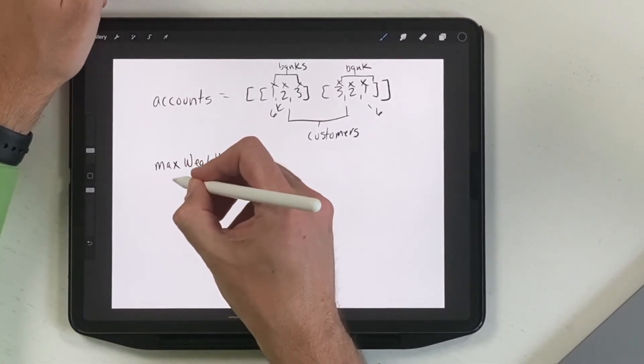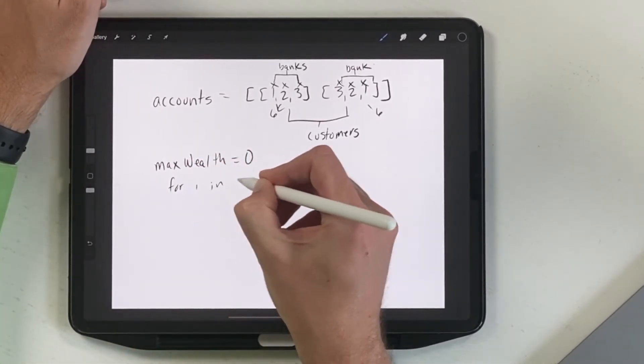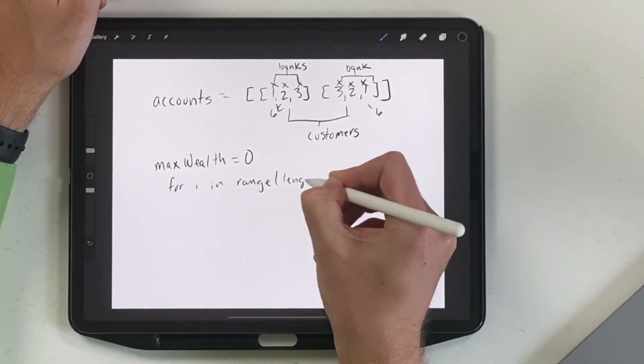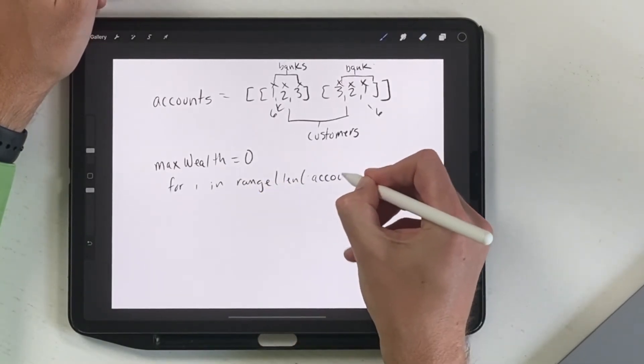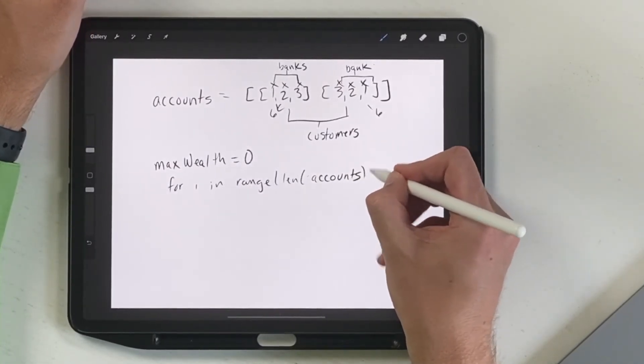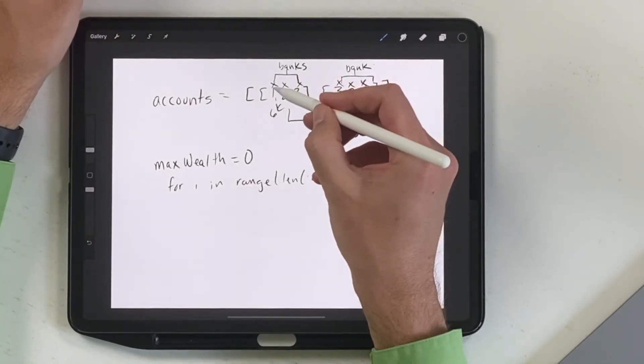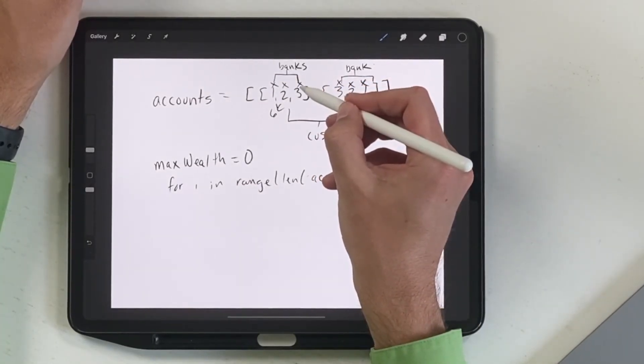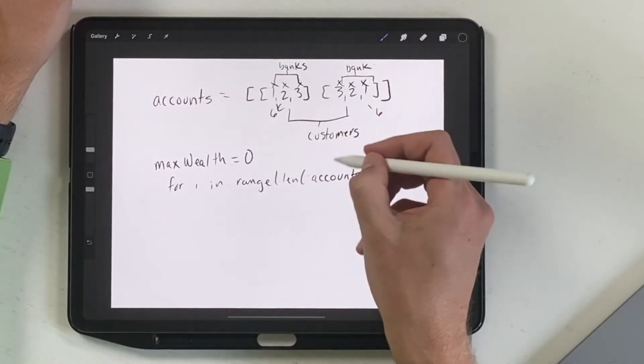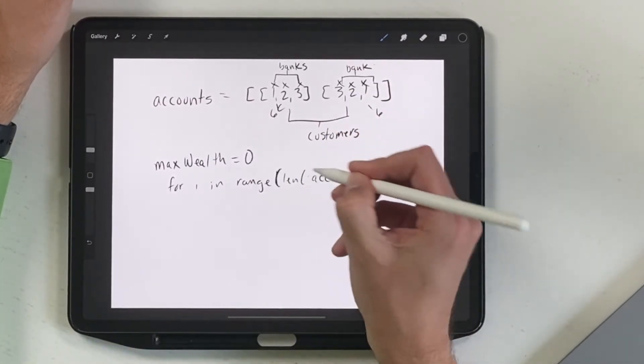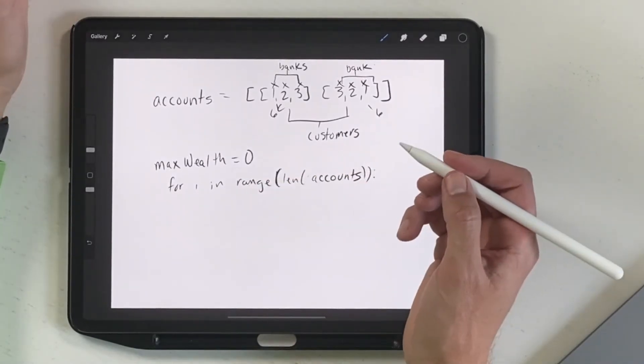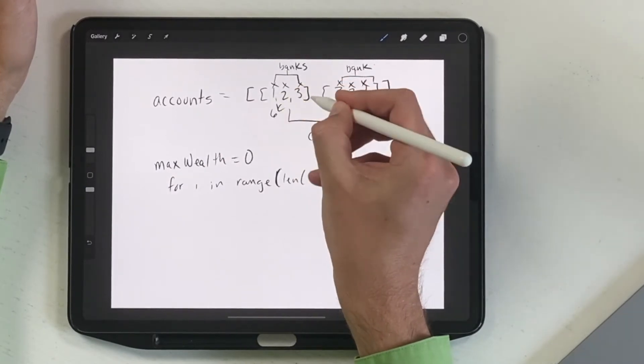So first thing what we'll do is we'll set a variable called max wealth and we're just going to zero. So that's where we're going to start. We're just going to set a variable. Then we're going to loop through. So for I in range and we're going to do the length of accounts.